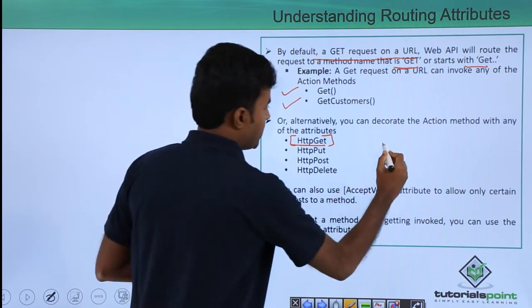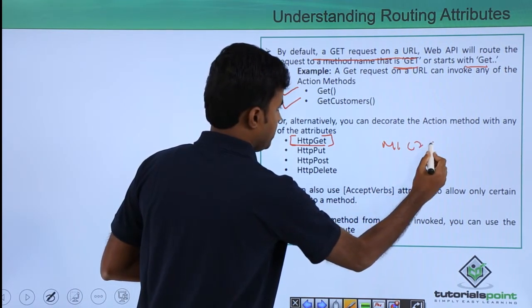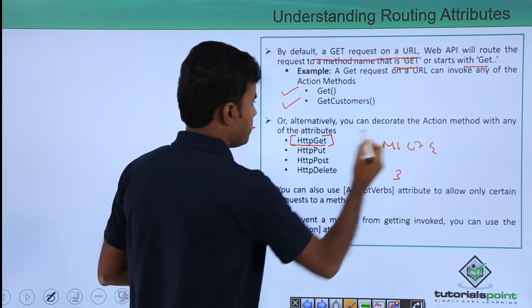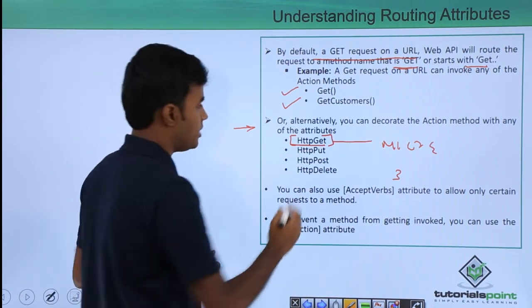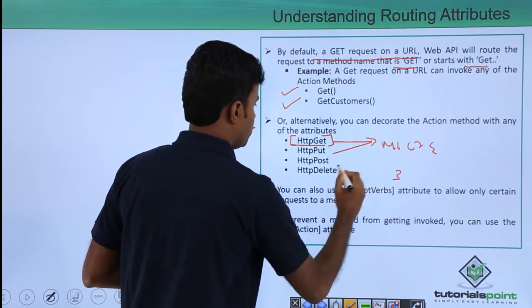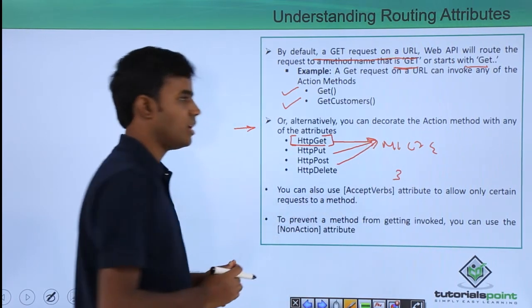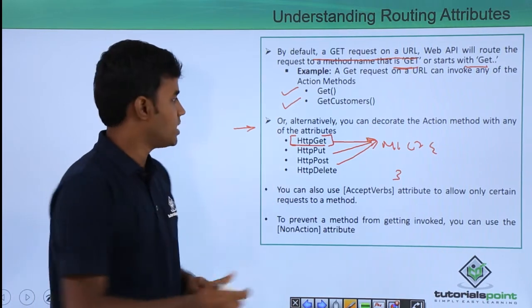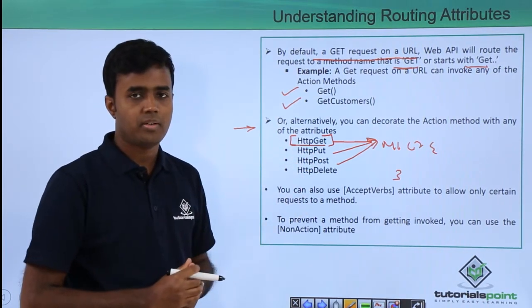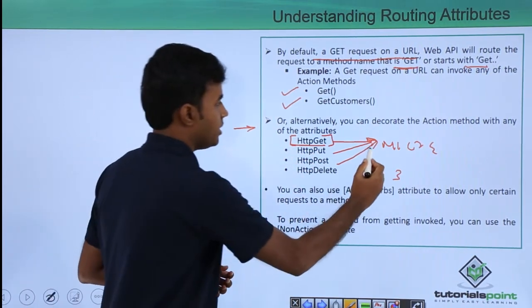For example, I can have a method called m1 and I can define this m1 can be decorated with HTTP GET, HTTP PUT, HTTP POST. In that case, any of the three different requests, for example GET, PUT, or POST, will be allowed on that particular action method.